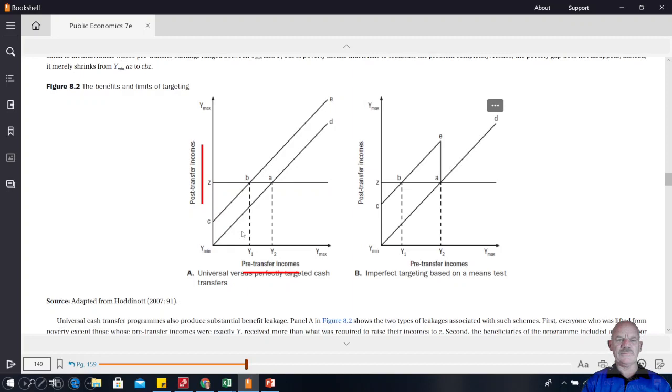If pre-transfer income is the same as post-transfer income then that means the government doesn't transfer anything. So a 45 degree line just means there's no government action and they've just drawn a line to show how income increases from lowest to highest. Now the increase will probably not be a straight line but this is just the idea.